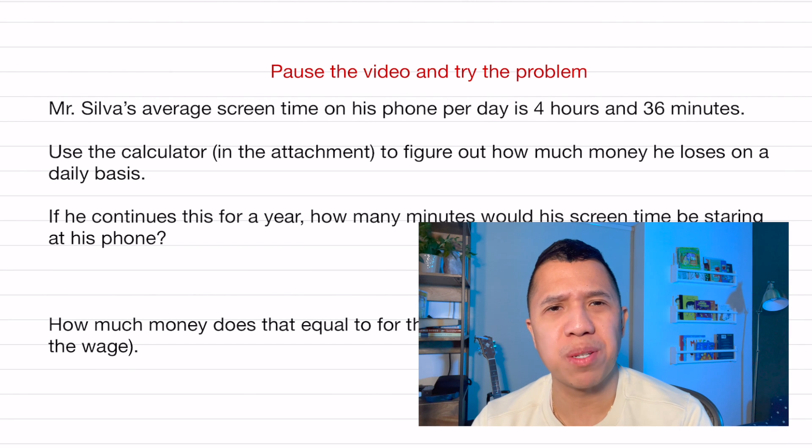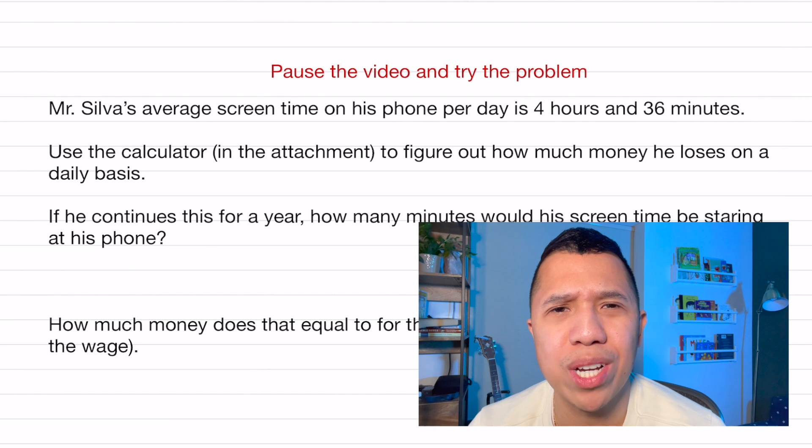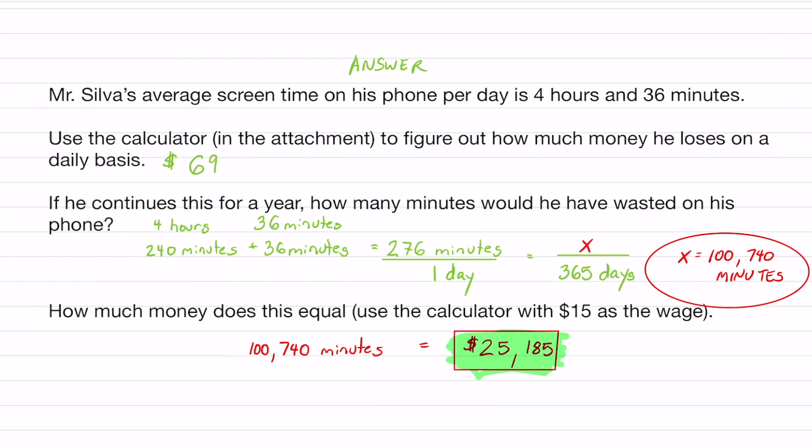Pause the video and try out this problem. When you're done, just unpause it and see how much money I wasted if I were to continue my phone screen time for a year. Don't cheat. Remember that you can access that calculator in the description box.